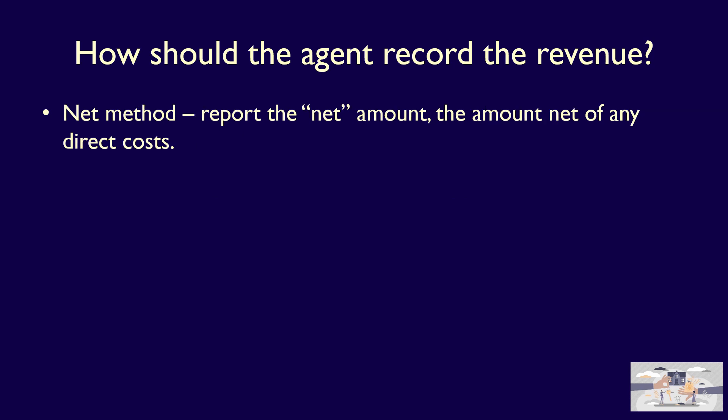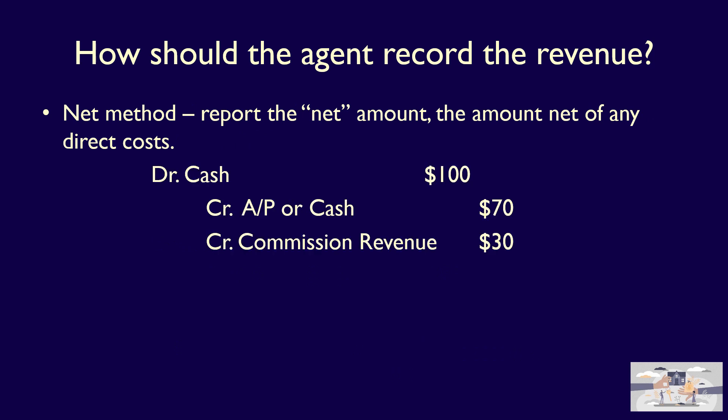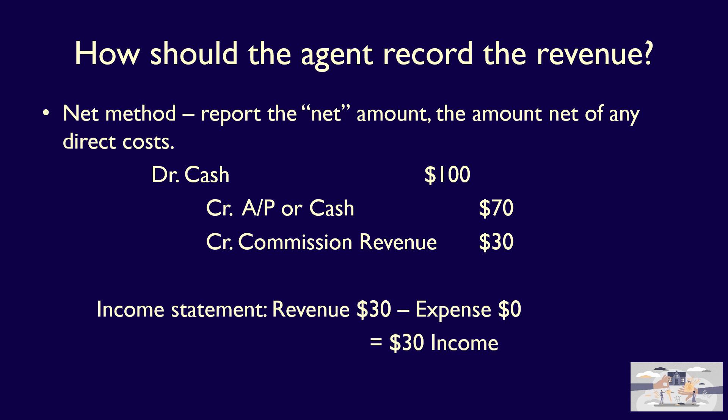The alternative is to report the net amount, the amount net of any direct costs. In this case, MaxSold would record a debit to cash of $100, which is the amount of money they receive from the buyer. A credit to accounts payable or cash, which is the amount they either have to pay to the seller or have already paid. And then a credit to commission revenue for $30, which is the amount of the fee they earned from acting as the agent. On the income statement, the outcome would be revenues of $30, expenses of $0, resulting in income of $30, which is their fee.